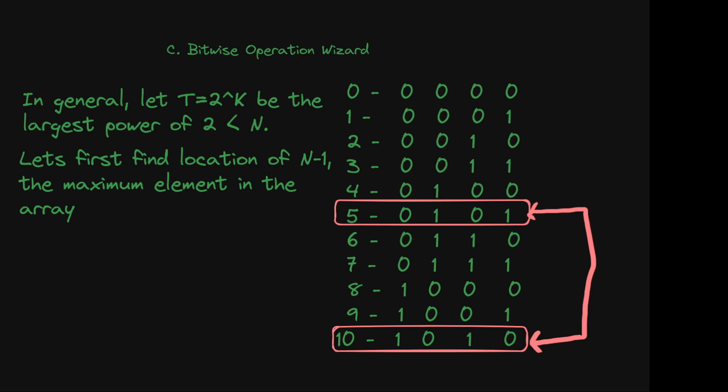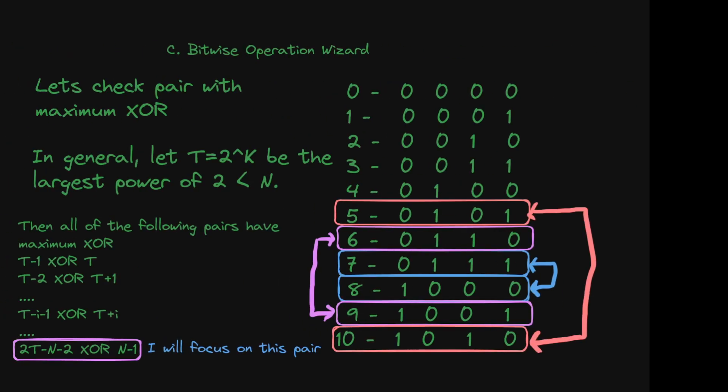In general, let t equal 2 to the power k be the largest power of 2 less than n. For the rest of the problem, I will focus on the pair where one element is n-1 and the maximum XOR is 2 to the power k plus the remaining bits not present in 2 to the power k. This is based on one algorithm I know, and the intuition comes from playing around with the problem.